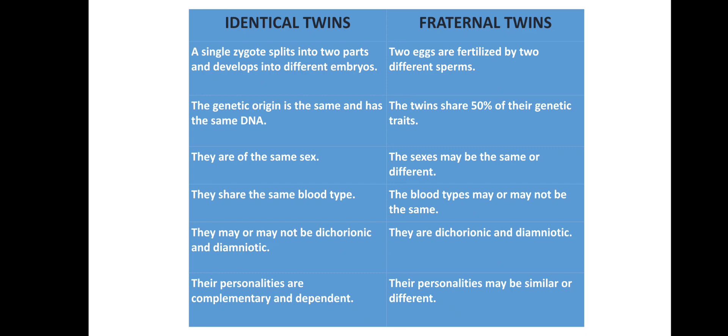The first difference: in identical twins, one single zygote is split and different embryos develop. In fraternal twins, two different eggs are fertilized by two different sperm. In identical twins, both babies have the same genetic origin — the same DNA. But in the case of fraternal twins, they share only 50% of their genetic material, so 50% of the DNA is the same.